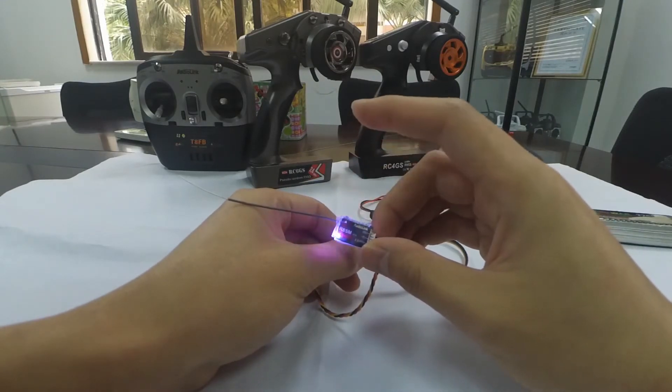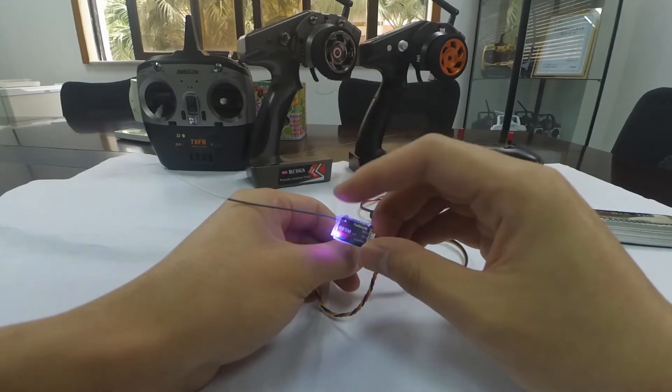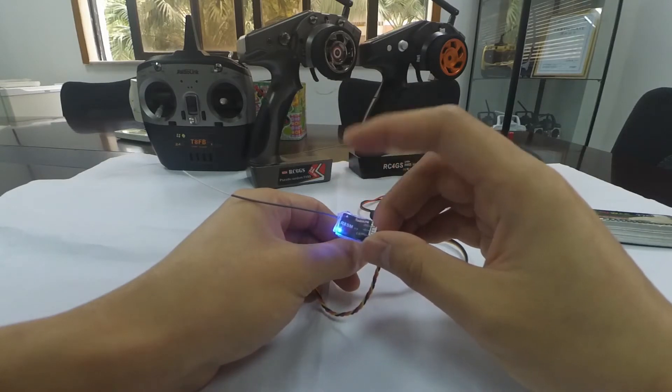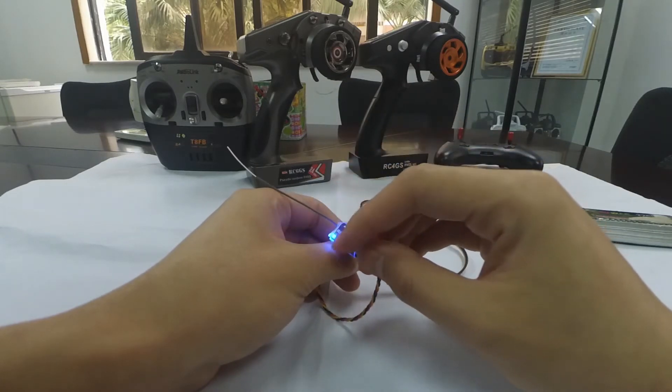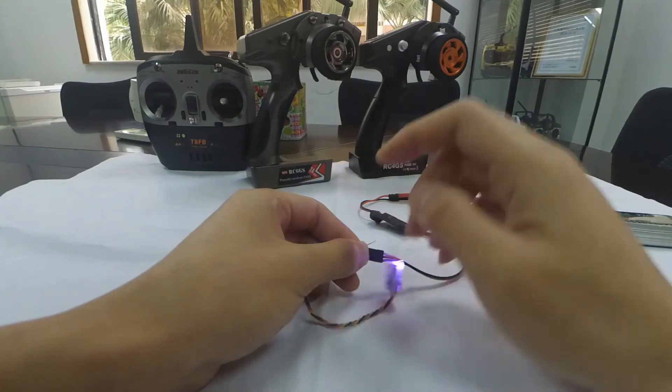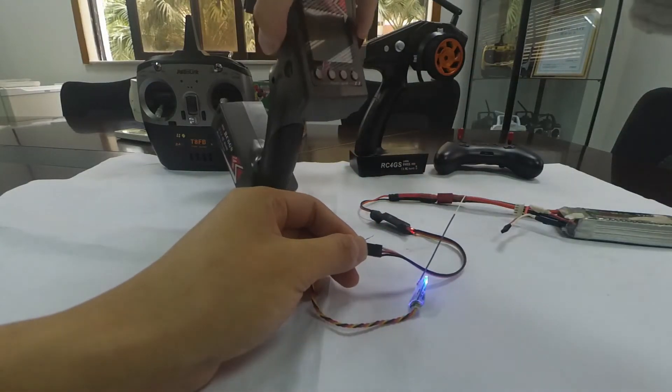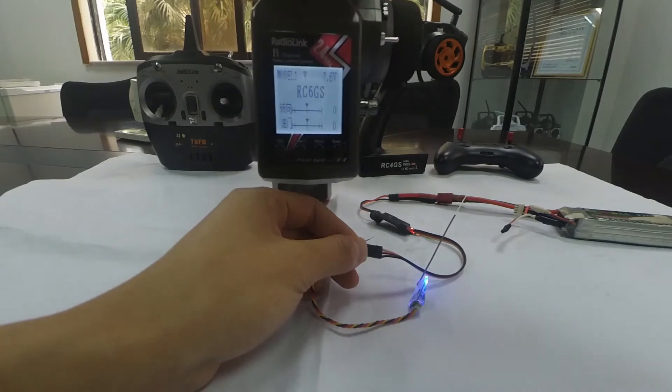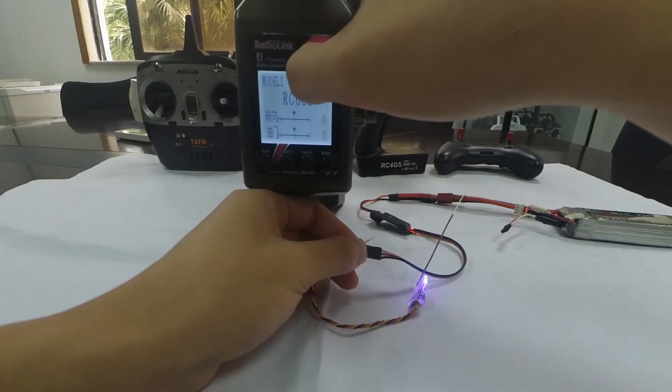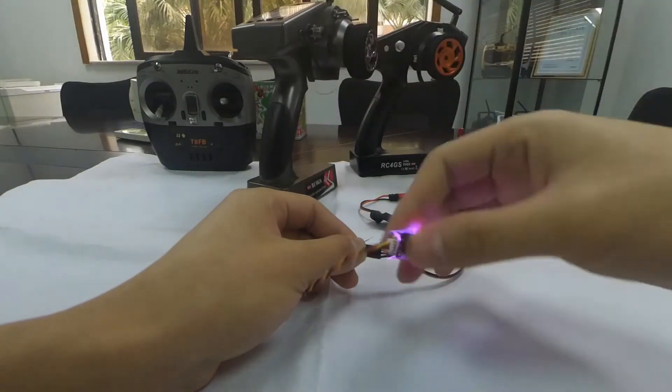We can see that the LED indicator is flashing slowly meaning it's not bound yet. Let's take RC6GS as an example and we can see that there is no signal tower display on the LCD screen. Now let's do the binding.